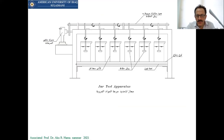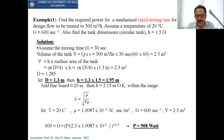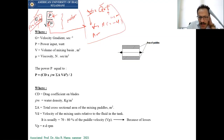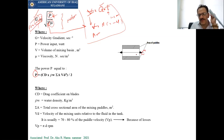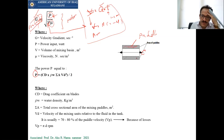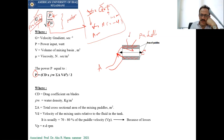Let me solve this example. We have a rectangular flocculator — a slow mixing tank — with three rotating paddles to treat 300 m³/minute during 20 minutes detention time. So Q = 300 m³/minute and T = 20 minutes. The volume equals Q × T = 300 × 20 = 6,000 m³. This is the volume the flocculator should have.